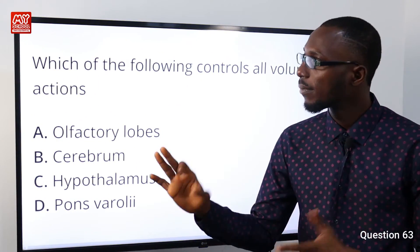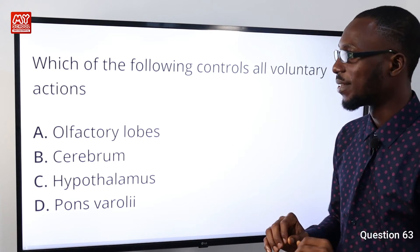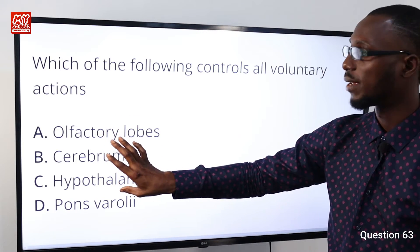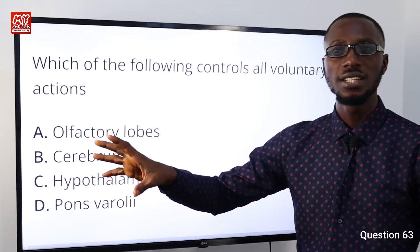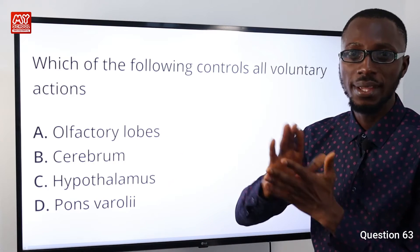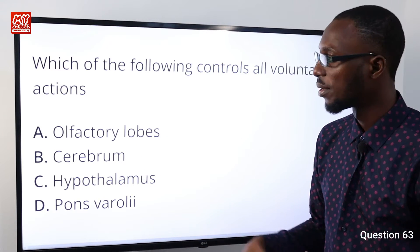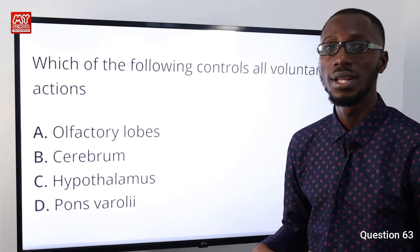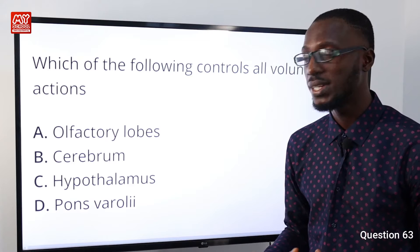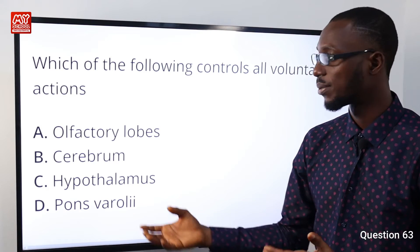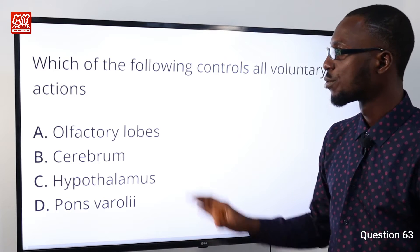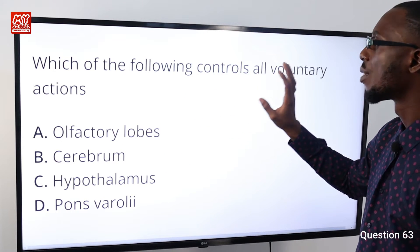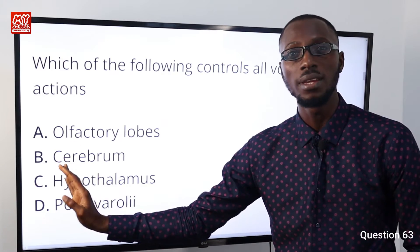Question number 63: Which of the following controls voluntary actions? The olfactory lobes are responsible for smell. The cerebrum, also called the forebrain, is the largest part of the brain. It controls actions like reading, walking, clapping, and jogging — those are voluntary actions, actions that you take consciously. The hypothalamus is responsible for regulating body temperature and controls emotional responses. The pons varoli is responsible for breathing and sleeping. The cerebrum is the part of the brain that controls all voluntary actions, making option B very correct.